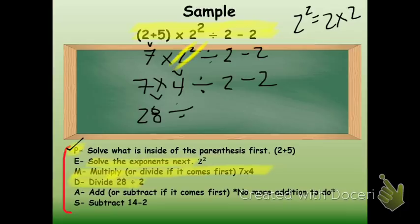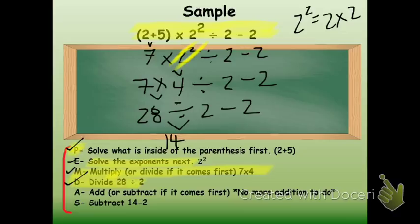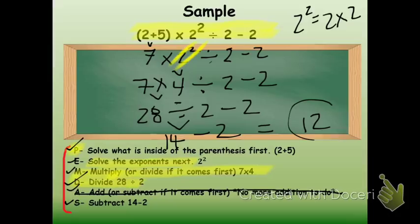I'm going to bring everything else down with that. So I've done the exponent and multiplied. My next step is to divide 28 by the 2. So I do 28 divided by 2 and I get a quotient of 14. And I bring down my minus 2. There's no addition in this problem, so I don't need to worry about that. And my last step is to subtract: 14 minus 2, and I get a difference of 12, which is my final answer.